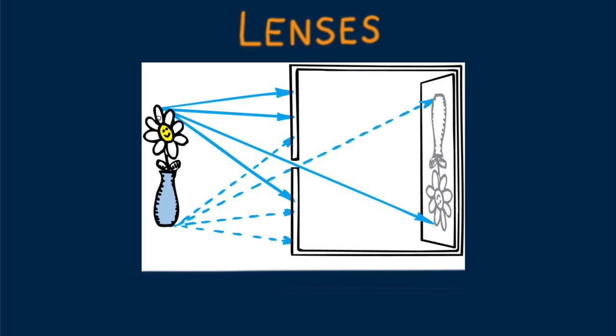Let's return to the pinhole image of the flower and vase of the previous lesson. Recall that the pinhole prevents the overlapping of rays of light reflecting from the flower and vase. With no overlap, an image is formed. Yum physics.